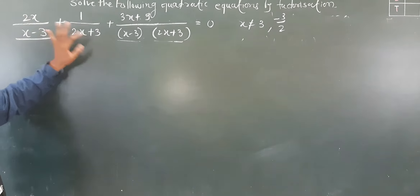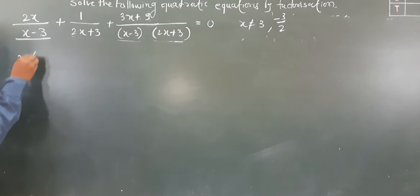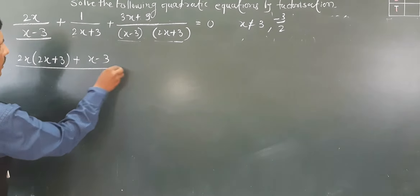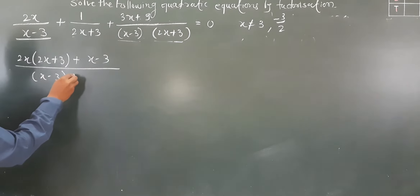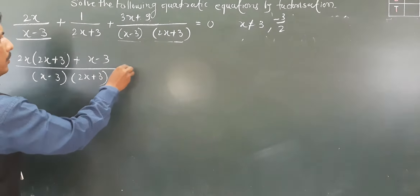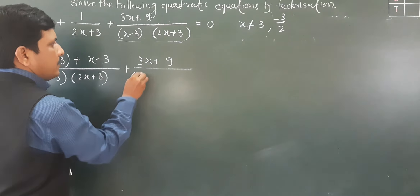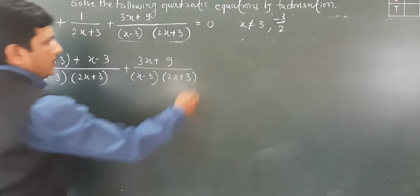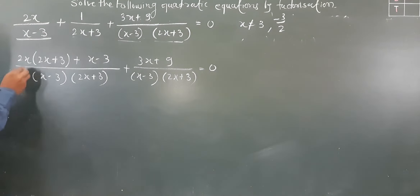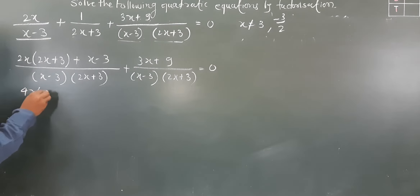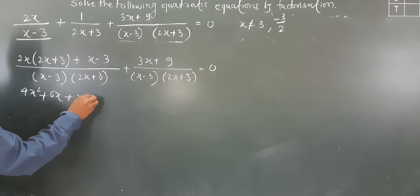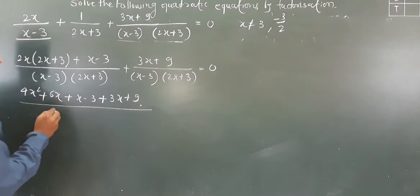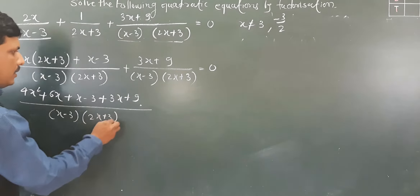To make the denominators the same, we multiply: 2x by (2x+3) gives 2x(2x+3), and 1 by (x−3) gives (x−3). So the combined numerator over (x−3)(2x+3) is: 2x(2x+3) + (x−3) + (3x+9), all divided by (x−3)(2x+3) equals 0. Expanding: 2x × 2x = 4x², 2x × 3 = 6x, plus x − 3 + 3x + 9.